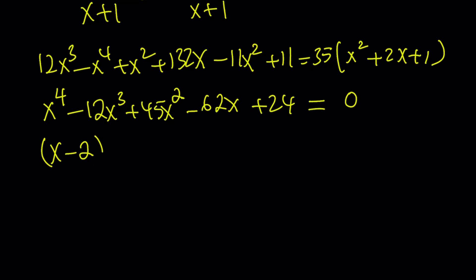By using the rational root theorem, we get (x-2) multiplied by (x-3). And after finding both of these factors, obviously, you can use polynomial division or some other technique to find out the quadratic. And that is going to be x² - 7x + 4.